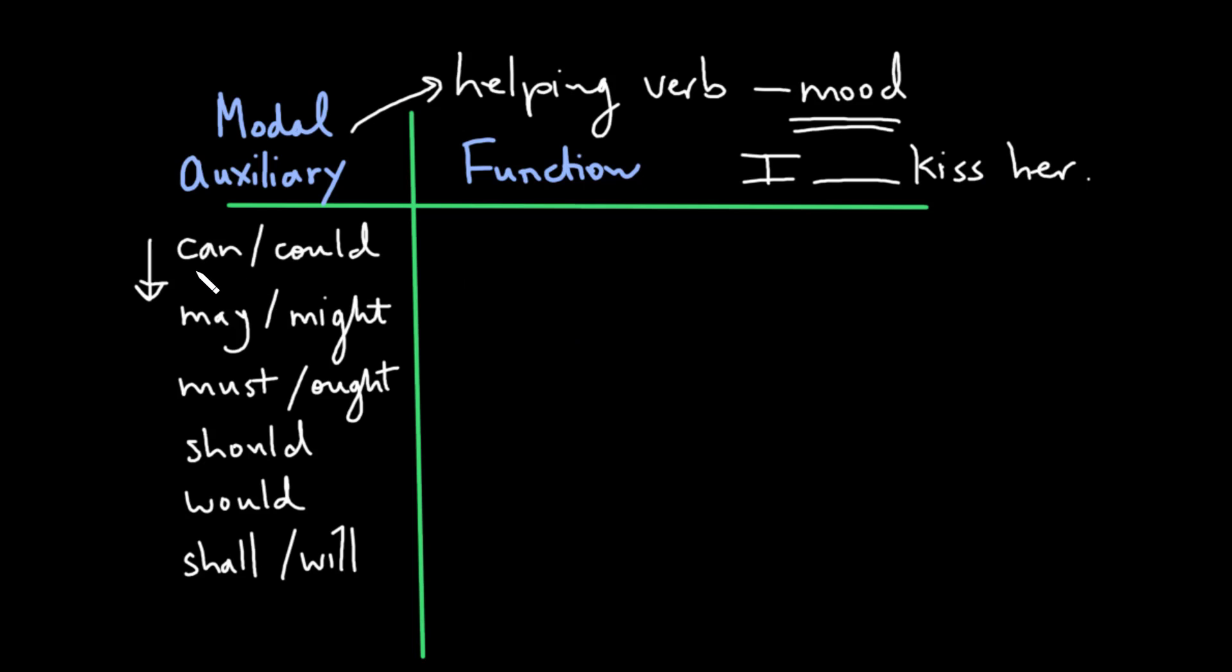So if you were to say can, for instance, I can kiss her, then presumably you would be expressing some kind of ability. Maybe you're boasting about your ability to kiss somebody. Not sure why you would, but you could say I can kiss her. But can can also mean permission here. So this can also mean permission if you say I can kiss her, right? She gave me permission. Hooray! Then can can express permission.